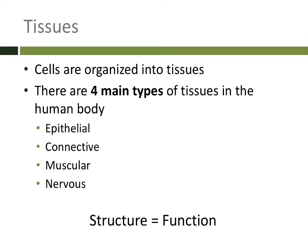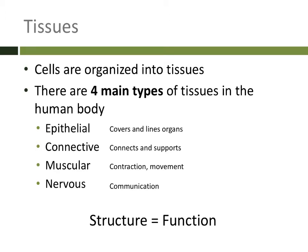Epithelial tissue's job is to cover and line organs and the surface of the body. Connective tissue has the function of connecting and supporting various organs and parts of the body. Muscular tissue is responsible for contracting and movement — not only movement of the body, but movement of material through the body. And nervous tissue is responsible for communication. Today we are going to be talking about epithelial tissues.